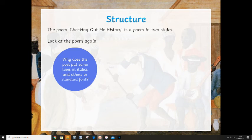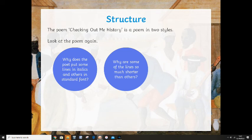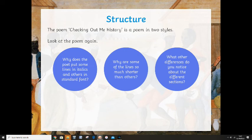Why does the poet put some lines in italics and others in standard font? Sometimes when you're reading it online it might not always show that way, so if you've got your anthology it should be there. Why are some of the lines so much shorter than others? Some have simply just a few syllables, and some are much longer. What other differences do you notice about the different sections? Sometimes just looking at a stanza — comparing that with other stanzas — is there one that's much longer, or one where all the lines are much longer? Think about it and think about why.